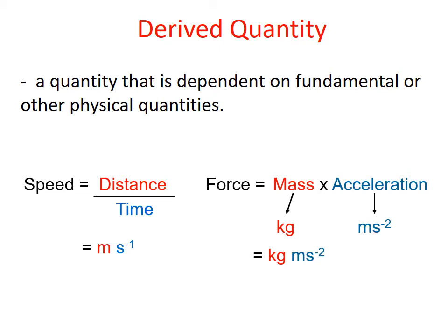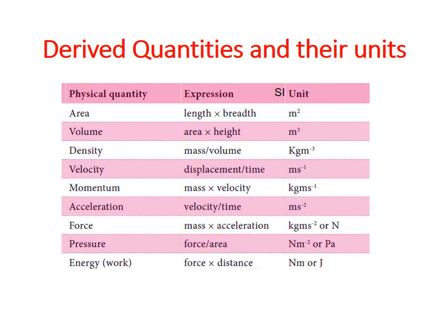Please note that these are also the SI units for these derived quantities. This table shows some other derived quantities as well as their units. Area, volume, density, velocity, momentum, acceleration, force, pressure, and energy or work are all derived quantities. There are other derived quantities but these are the main ones.